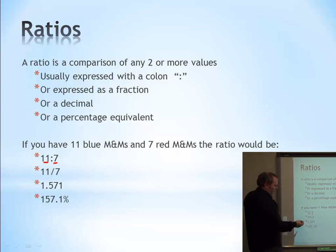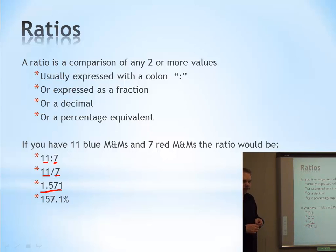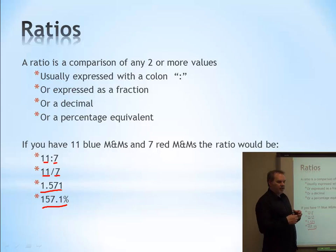Or, we'd say 11 to 7 by using a divide sign. If we take the 11 divided by 7 and we converted that into a decimal, we'd say the ratio is 1.571 or 157.1%. Any of these say exactly the same thing of ratio.